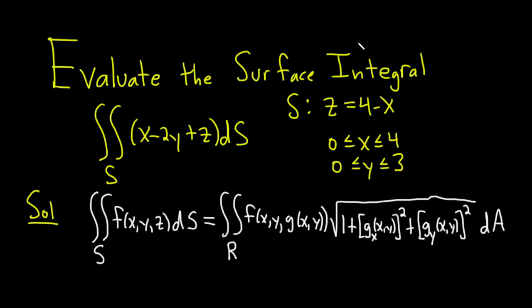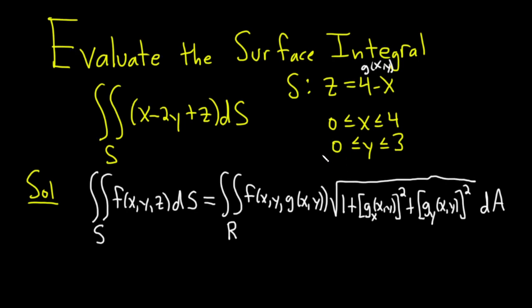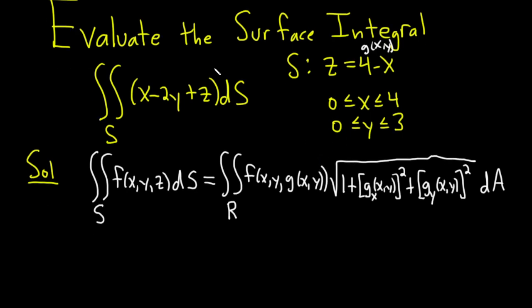So in all of this, z equals g(x,y). That's the equation of the surface. Let's go ahead and use this formula. We might as well compute the partials since we're going to need them.